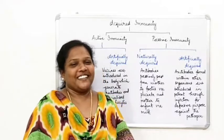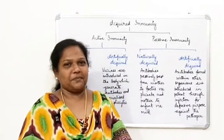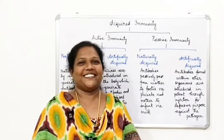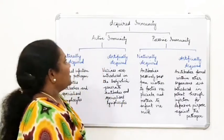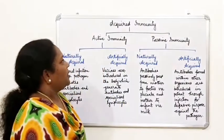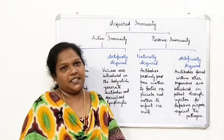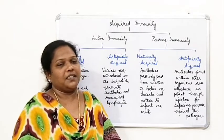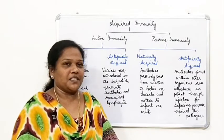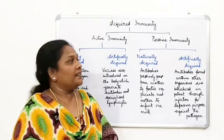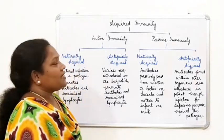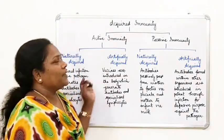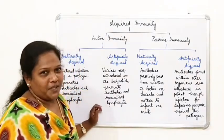Hello everyone, let us continue with the chapter Human Health and Diseases, Part 16. Last class we studied about innate immunity, which is a natural immunity. Today's class we are going to study about acquired immunity.